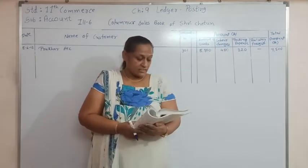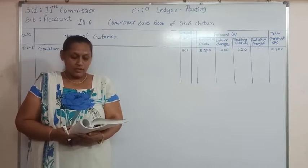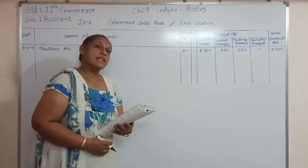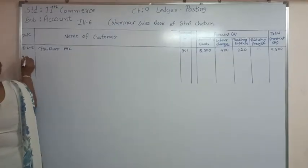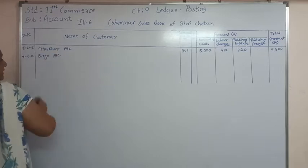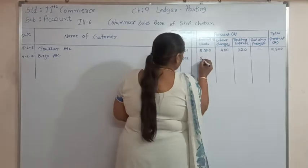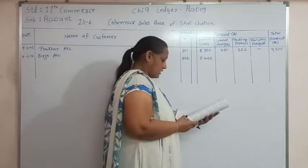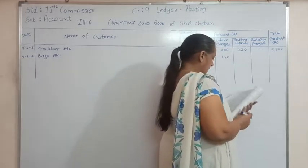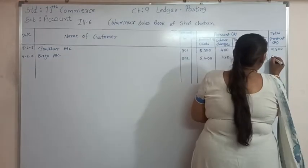Let's see the next transaction. Goods of rupees 5400 sold to Birju, invoice inclusive of labour charges 140, railway freight 100, outward invoice number 302, date 9/6/15. So here the next date is 9/6/15, account is Birju account, invoice number is 302, goods sold is rupees 5400, labour charges is 140, there is no packing expense, railway freight is 100. Total of this will be 5640.